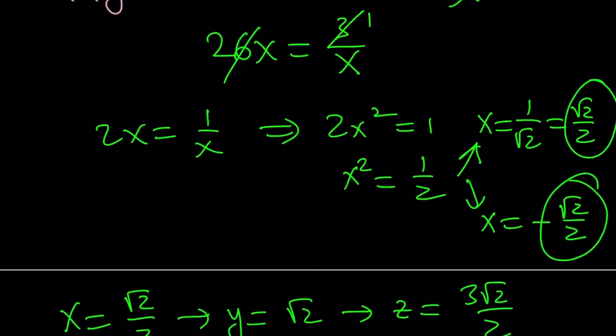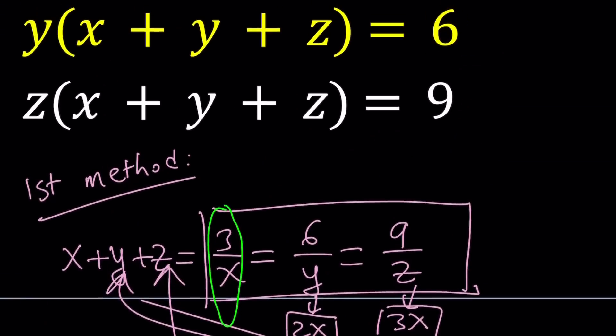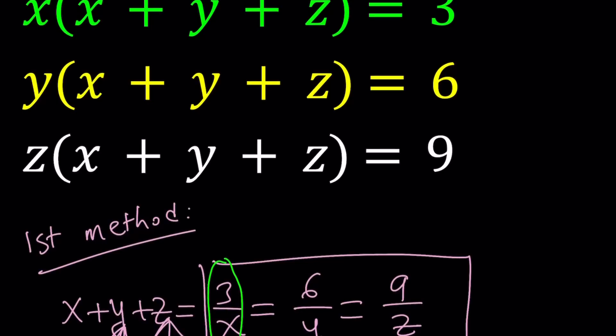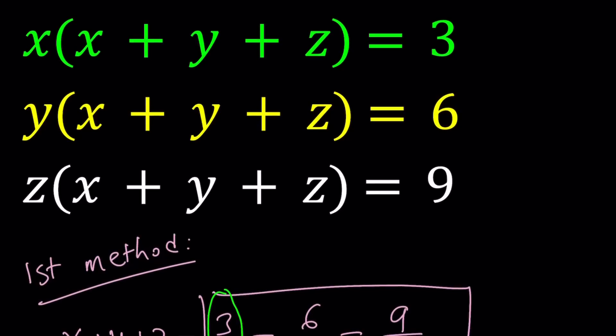One thing to keep in mind, if x is negative, all of them are negative, because if you think about it, add x, y, z, you get a negative answer. x is negative, their product is always positive. Make sense? That kind of checks up with the original equations. That's the first method.